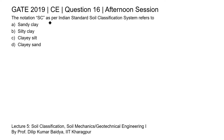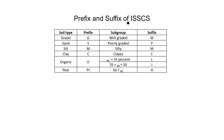In this question we need to find the notation SC as per the Indian standard soil classification system. There are prefixes used in this system: for gravel we use G, for sand we use S, for silt M is used, for clay C is used, and O and PT are used for organic and peat respectively, as per the Indian standard soil classification system.